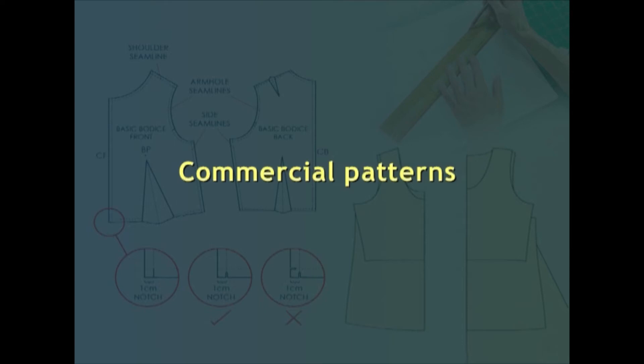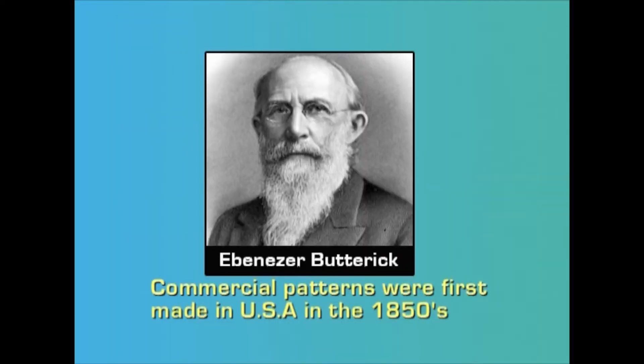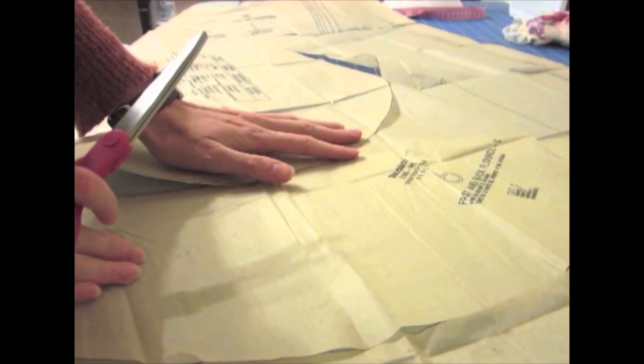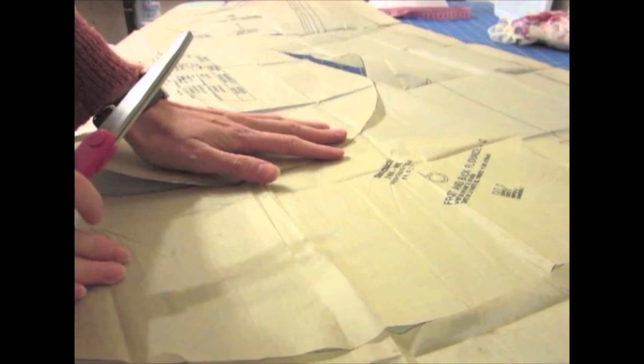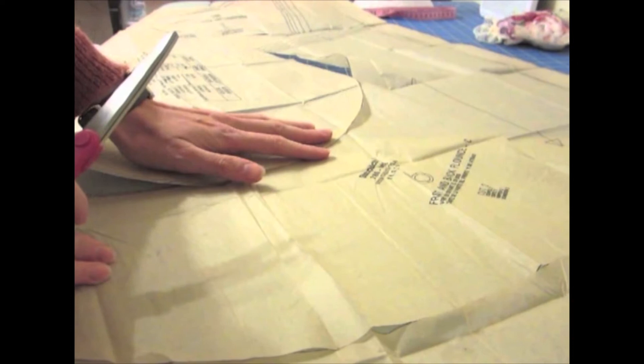Coming to commercial patterns: commercial patterns were first made in the USA in 1850 by Ebenezer Butterick, who was a tailor. In the beginning, they were crude patterns in rough paper for simple designs only. The first patterns were for men's and boys' clothing. Commercial patterns were prepared on the basis of standard measurements. Patterns for women and children were also developed later and became available commercially. Commercial patterns are usually done on tissue paper; since tissue paper is not bulky, it allows many pieces of pattern to be packed compactly in an envelope.